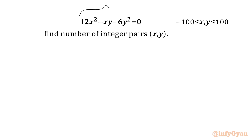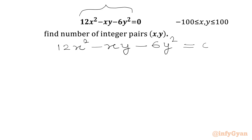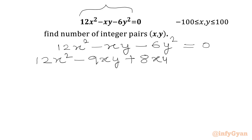We are going to factorize first. So I will write here: 12x² minus xy minus 6y² equals 0. Multiplying 12x² and 6y² gives minus 72x²y². So I can split the middle term: minus xy becomes minus 9xy plus 8xy. The product would be minus 72x²y², which is matching. Minus 6y² equals 0.